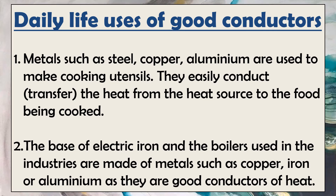Let's discuss some daily life uses of good conductors of heat. Metals such as steel, copper, and aluminum are used to make cooking utensils because they easily conduct and transfer heat from the heat source to the food being cooked. The base of electric irons and boilers used in industries are also made of metals because they are good conductors of heat.